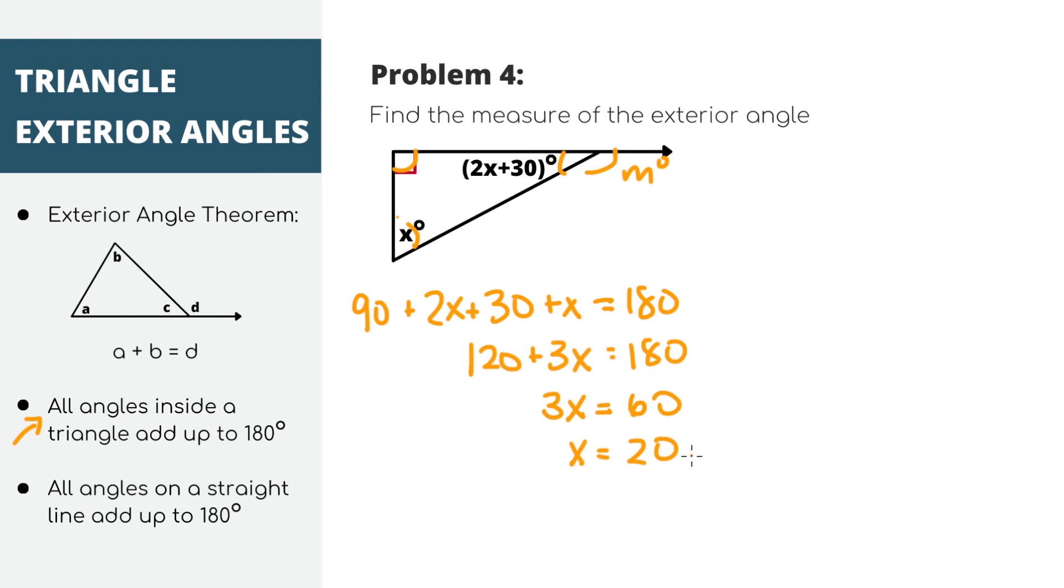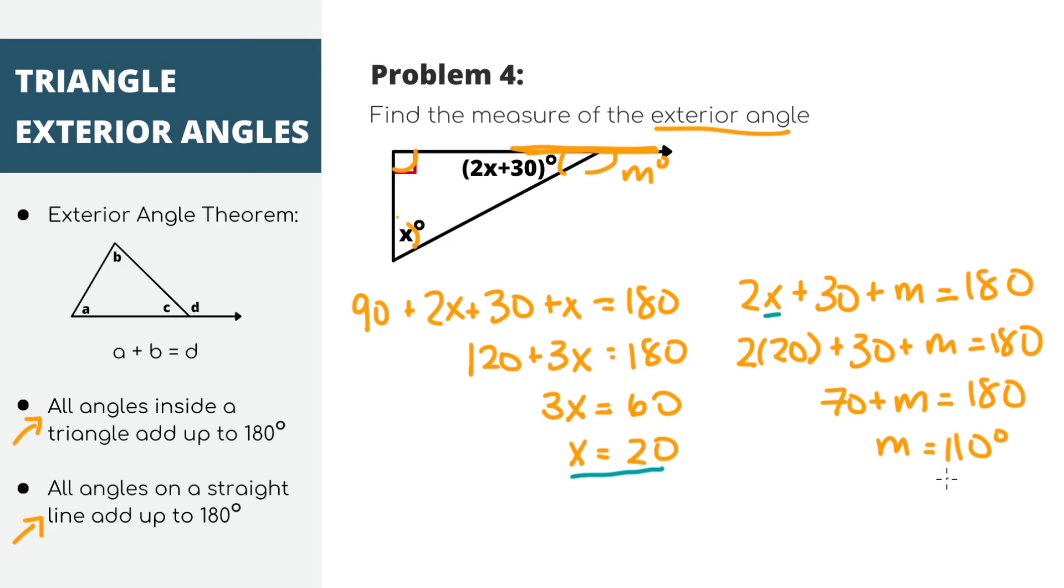Now we're not done yet because the question asked us to find the measure of the exterior angle, not just x. So notice that this exterior angle is on the same straight line as this angle here. From that fact, we can set up an equation because all angles on a straight line add up to 180 degrees. 2x plus 30 plus m equals 180. We have two variables in this equation, but we already figured out the value of x, which is 20. Plugging in 20 for x, we'll get m equals 110 degrees. This is our final answer.